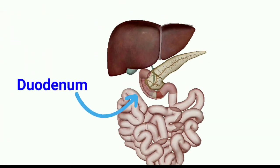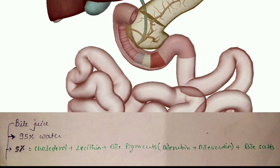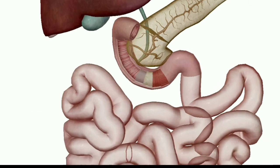The acidic food is neutralized in the duodenum with the help of bile juice secreted by the liver. Bile juice does not contain any enzyme. It's 95% water and the rest 5% is cholesterol, lecithin, bile pigments such as bilirubin and biliverdin, and bile salts.